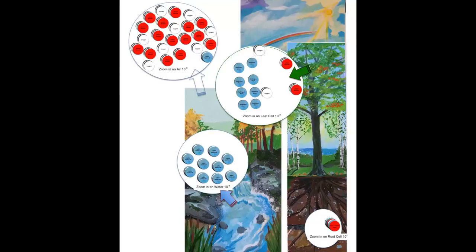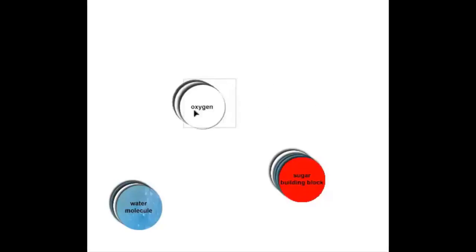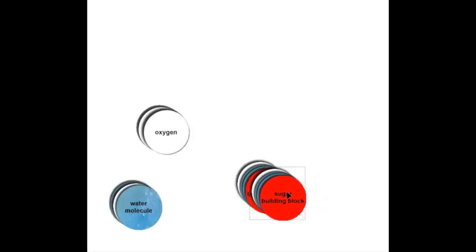The oxygen gas diffuses out of the leaf and into the atmosphere, just as carbon dioxide can come into the leaf. Inside the leaf, we have highly charged hydrogen atoms that can react with the carbon dioxide molecules. Those highly charged hydrogen atoms are powerful enough to strip an oxygen off of a carbon dioxide molecule, forming a stable water molecule and leaving behind a carbon and an oxygen bonded together. The highly charged hydrogen atoms then move in and react with that carbon and oxygen, forming a sugar building block.